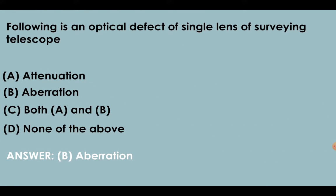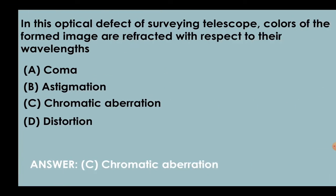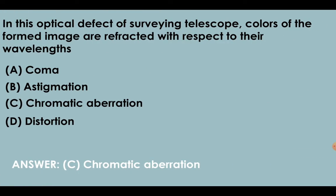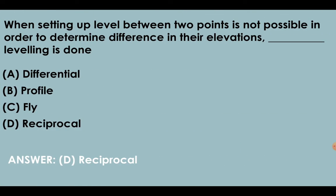Aberration is an optical defect of single lens of surveying telescope. In chromatic aberration, colors of the formed image are refracted with respect to their wavelength. When setting up level between two points is not possible in order to determine difference in their respective elevations, reciprocal leveling is done.